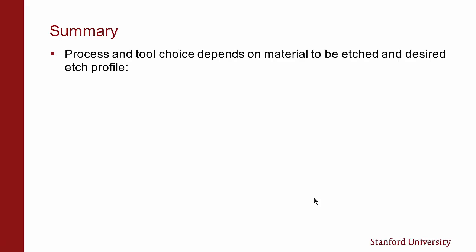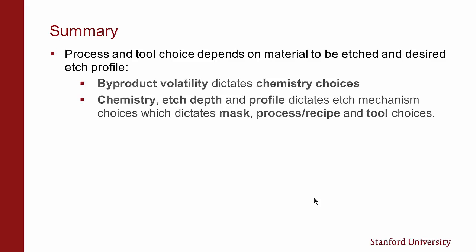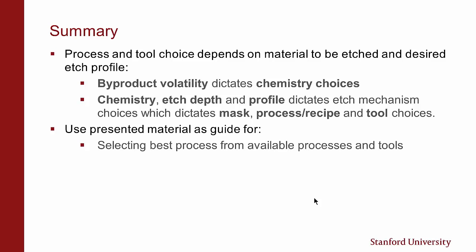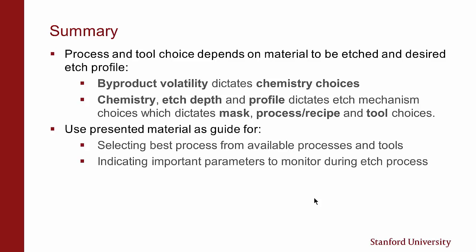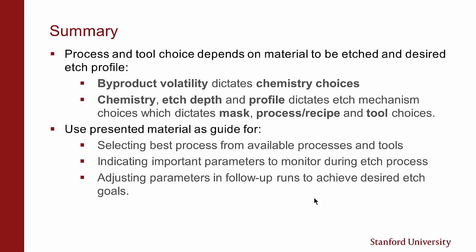Let's cover the summary. In this section, we've shown that process and tool choices depend on the material to be etched and the desired etch profile. Byproduct volatility dictates chemistry choices. Chemistry, etch depth, and profile dictate etch mechanism choices, which dictate mask, process recipe, and tool choices. One can use the presented material as a guide in three ways: first, for selecting the best process from available processes and tools; second, for indicating important parameters to monitor during the etch processes; and finally, for adjusting parameters in follow-up runs to achieve desired etch goals. Thank you.